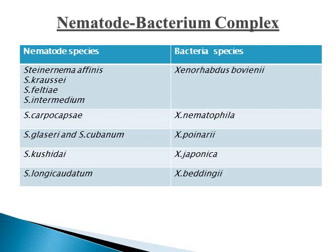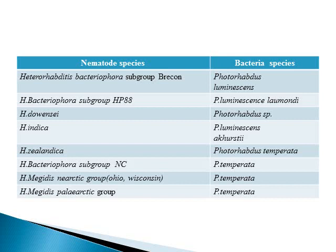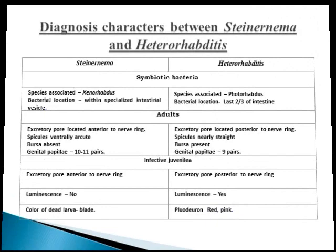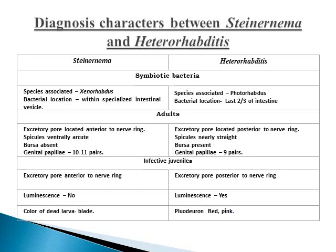The nematode-bacteria complex includes some examples from Steinernema: species such as S. affinis, S. crocae, S. feltiae, and S. carpocapsae, which have been reviewed by many scientists. Some species are also from Heterorhabditis. These are the associated bacterial species — Xenorhabdus and Photorhabdus — that form a mutualistic association between nematodes and bacteria to cause insect mortality. In Steinernema, bacteria of genus Xenorhabdus are located within special intestinal vesicles of the nematode, while in Heterorhabditis, Photorhabdus bacteria are located in the last two to three intestinal cells.